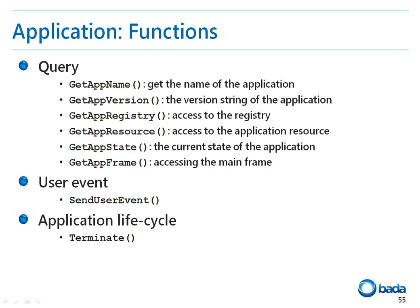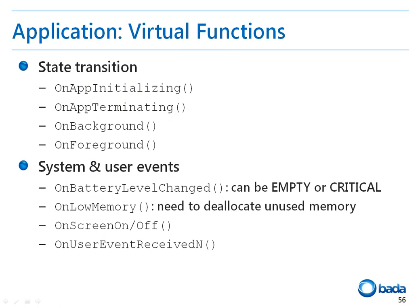The SendUserEvent function to generate a user event is implemented. To terminate an application from within the application, you can use the Terminate function. In this application class, a few virtual functions are defined. State transition related virtual functions and system or user event related virtual functions are defined so you can develop an application by implementing them. The state transition related virtual functions are OnAppInitializing, OnAppTerminating, OnBackground, and OnForeground. The system and user event handling virtual functions are OnBatteryLevelChanged, which is called when the battery is low; OnLowMemory, which is called when the available memory is low; OnScreenOnOff, which is called when the screen is turned on or off; and OnUserEventReceivedN, which is called when a user event occurs.